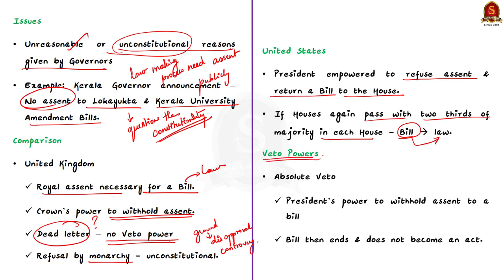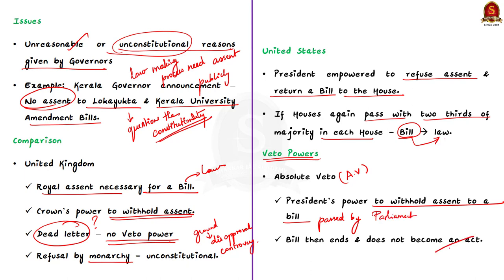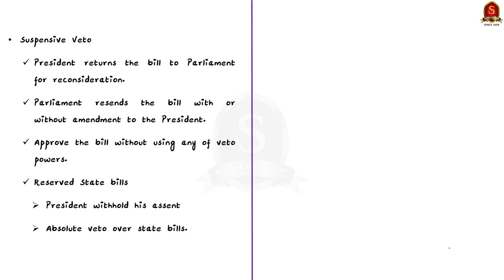There are three types of veto power: absolute veto, suspensive veto, and pocket veto. Absolute veto refers to the power of the president to withhold assent to a bill passed by the parliament — the bill then ends and does not become an act. Suspensive veto is where the president returns the bill to parliament for reconsideration, and if parliament re-presents the bill with or without amendment, the president has to approve it without using any veto powers.